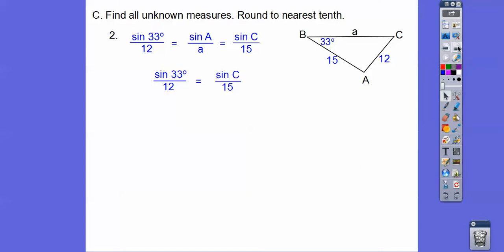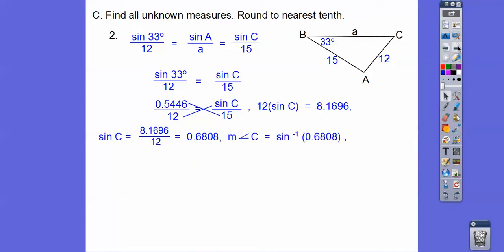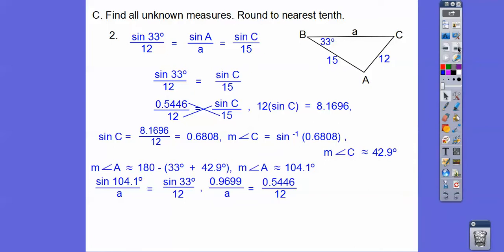So let's find the sine of 33 and then we go ahead and cross multiply, divide by 12. And when we divide by 12, we get 0.6808, and then this is where we do inverse sine. So angle C is inverse sine of that 0.6808, and we get about 42.9. So if this is 42.9, remember the triangle is 180, so we can get angle A reasonably easy, and we get angle A to be about 104.1. So now we can do the sine of 104.1 over A equals the sine of 33 over 12. And so when we cross multiply and divide, we get those kind of answers right there.